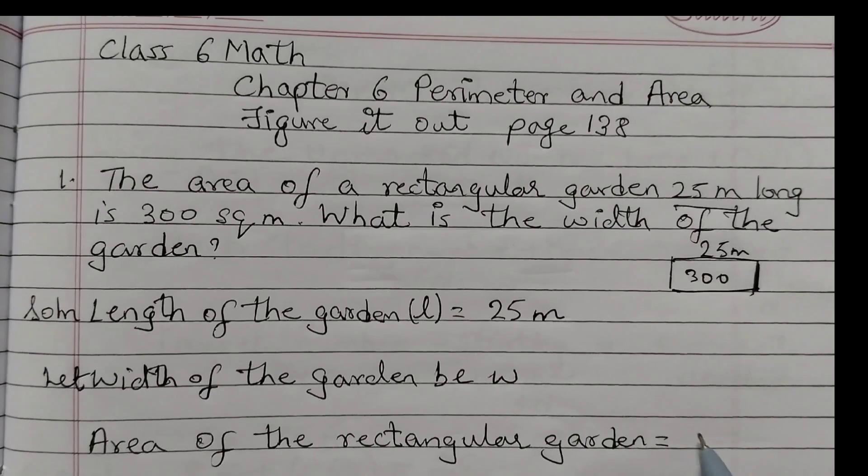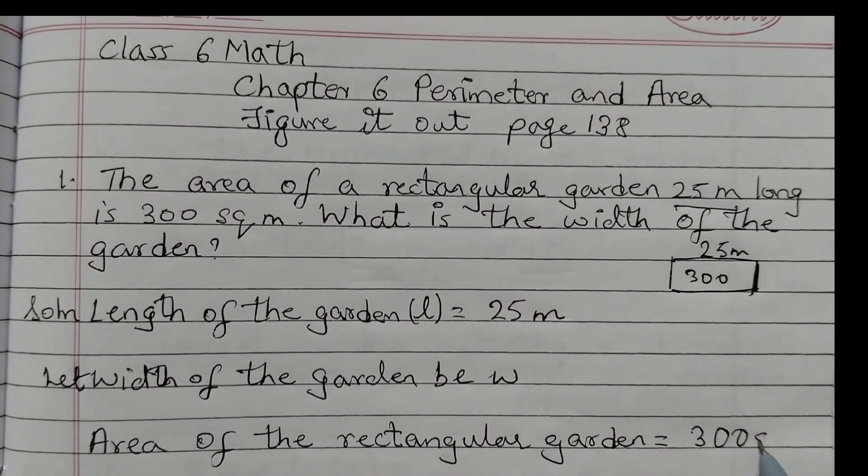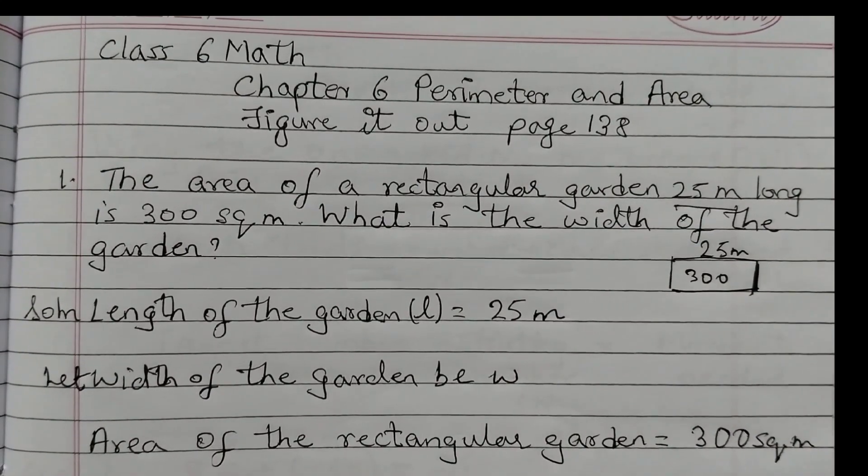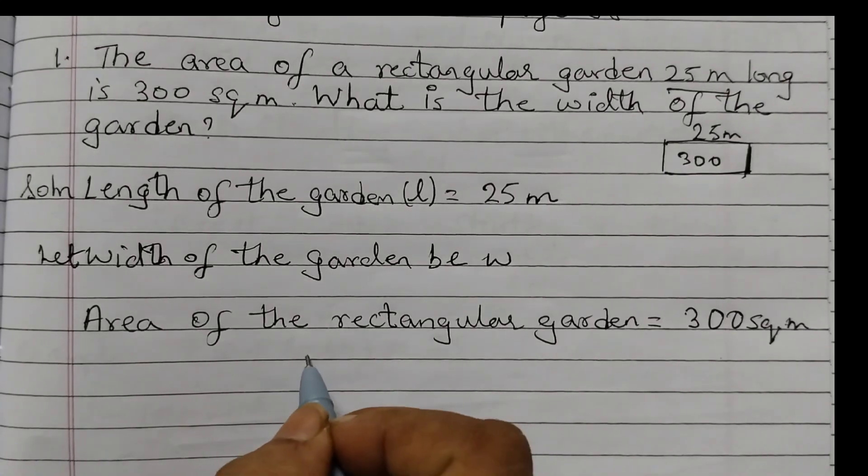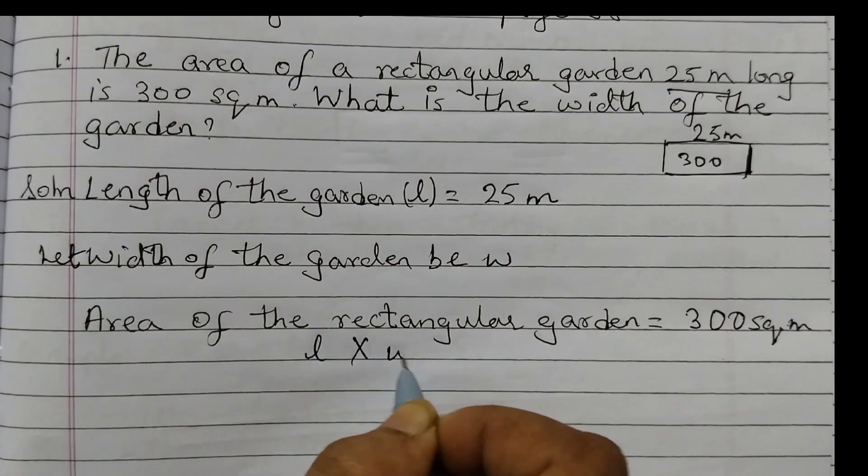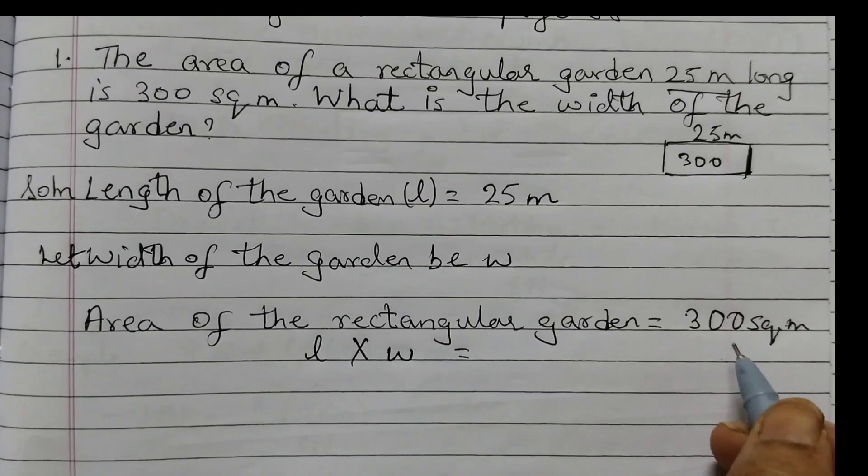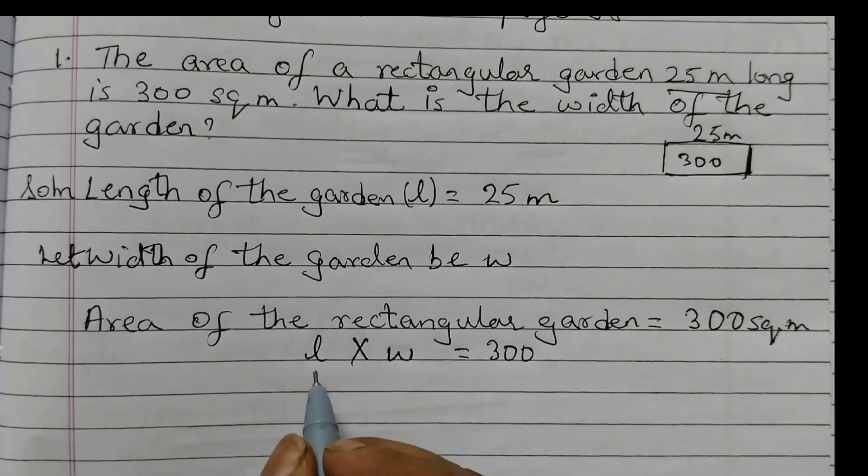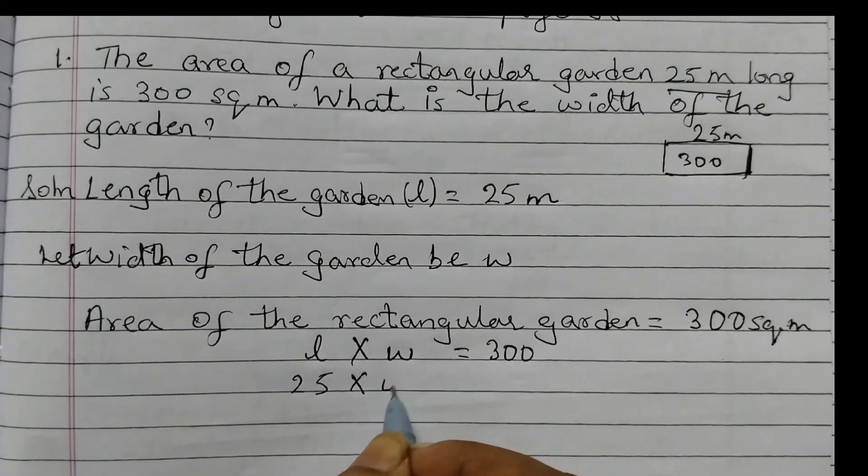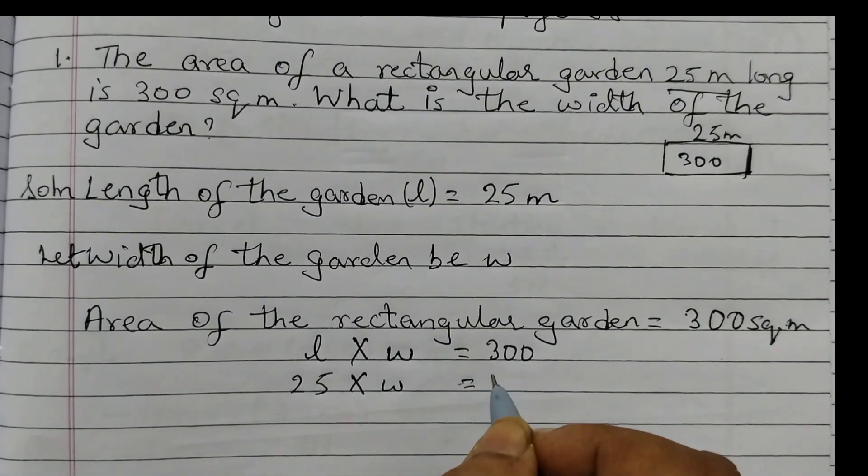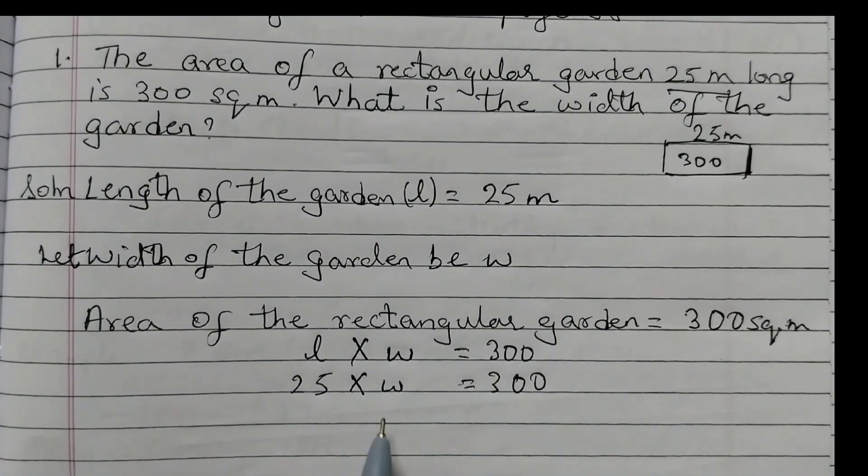Area of the rectangular garden is 300 square meters. So we know the formula for area, that is length into width is equal to this area, right? Length is 25 into W is equal to 300. So to find out W, we will take 25 to the other side.